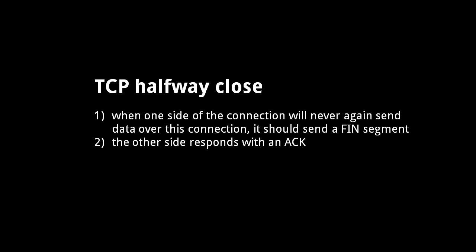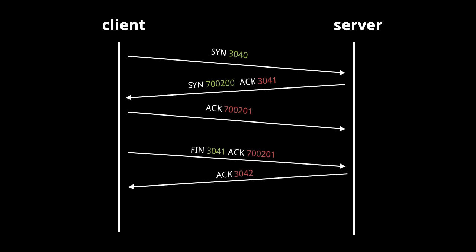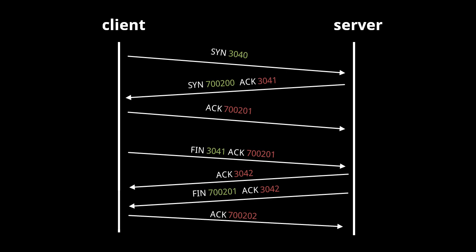When one side of a TCP connection decides it will never again send data, it should send a segment with the finish flag, and the other side should acknowledge this. If a client has no intention of sending any data over a new connection, it should immediately send a segment with the finish flag set, and the server should acknowledge with an incremented acknowledgement number — the finish flag, like the synchronized flag, counts as a byte in the stream. When one side closes its stream, the other side is under no obligation to close its end too, and can continue sending data. Once done, the server closes its end with the finish flag as well. Once both sides have closed the connection, it is fully closed and discarded by both hosts.